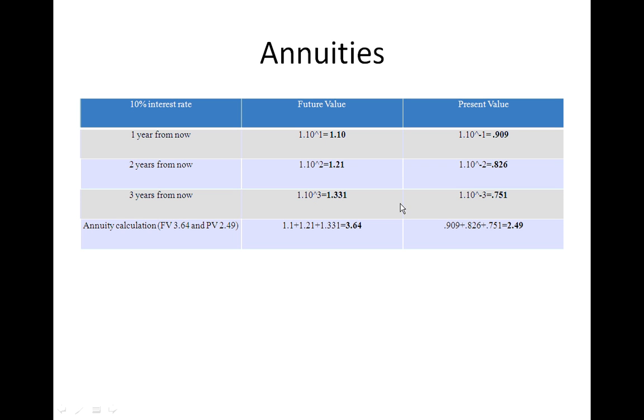We're going to get into annuities. Annuities are payments, equal payments made over time. So if there were three payments of $1, all you'd have to do is add up the future values in order to get the future value of an annuity, 3.64. Present value of the annuity is 2.49, and that's what we'd expect to see. The present value is less than the future value. But you see how the future value of annuity table and present value of an annuity table are calculated. There's nothing mysterious about it. And once you understand how these things work, it's a lot more clear to you.